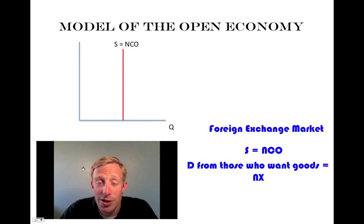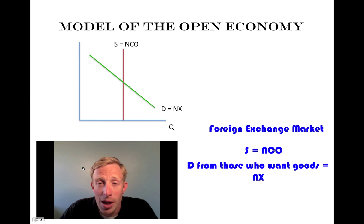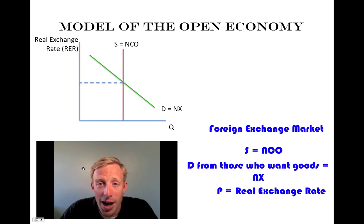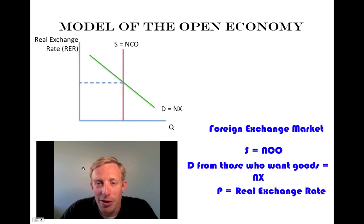Where the two lines intersect, we have a price called the real exchange rate. The reason the supply curve is straight up and down is because that amount is fixed — it's not a continually changing number because we're not continually adding new dollars to the markets for foreign exchange. It's set by the Fed.